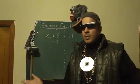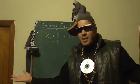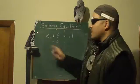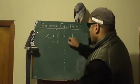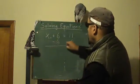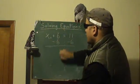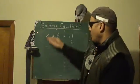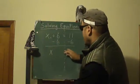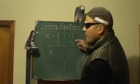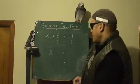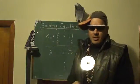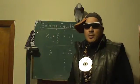Because the 6 is connected to the x with addition, we can undo it with subtraction. Let's subtract out that 6 — minus 6. And remember the golden rule: whatever you do to one side of an equation, you have to do to the other side. So we subtracted 6 on the left side, let's subtract 6 on the right side. 6 minus 6 becomes 0. We bring down the x and we're left with x equals 11 minus 6, which is 5.